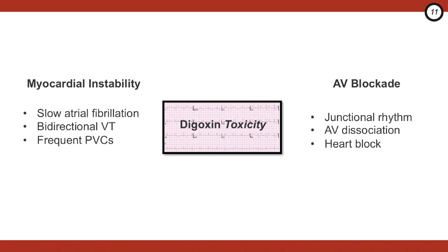Broadly speaking, the types of ECG changes can be split into myocardial irritability and AV blockade. Some of the rhythms you can see here are slow atrial fibrillation, bidirectional VT, frequent PVCs, and for the AV blockade, you can see junctional rhythms, AV dissociation, and heart block. Pretty much anything.